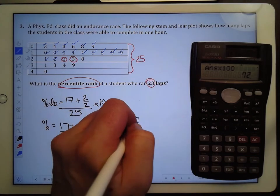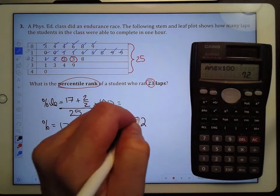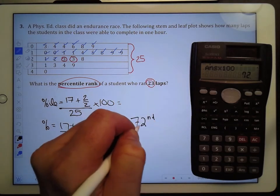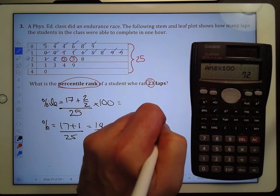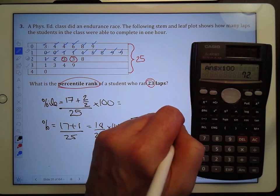So that means that if you ran 23 laps, you were in the 72nd percentile.